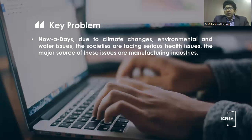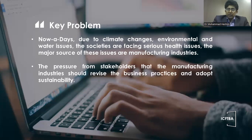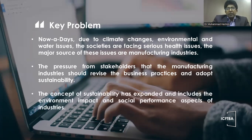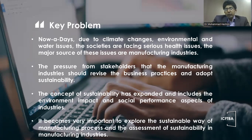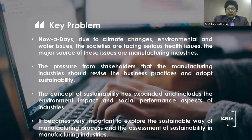Nowadays, due to climate changes, environmental and water issues, societies are facing serious health issues. The major source of these issues are manufacturing industries, and there is pressure from stakeholders for the manufacturing industry to revise business practices and adopt sustainability. The concept of sustainability has expanded to include the environmental impact and social performance aspects of industries. In today's discussion, we will explore and evaluate the production indicators pertaining to the achievement of sustainability in a textile supply chain.